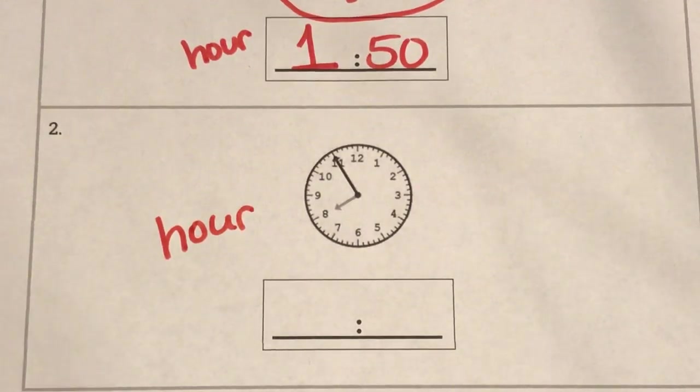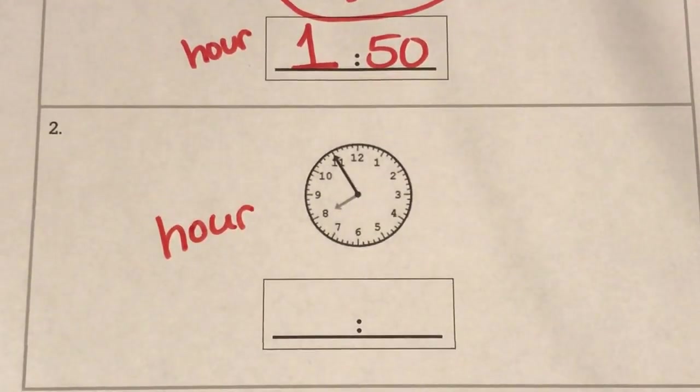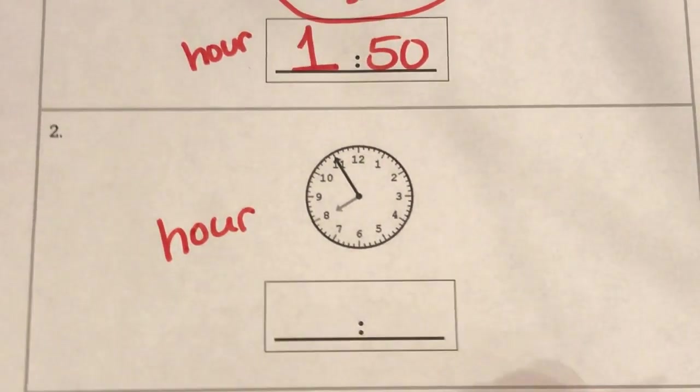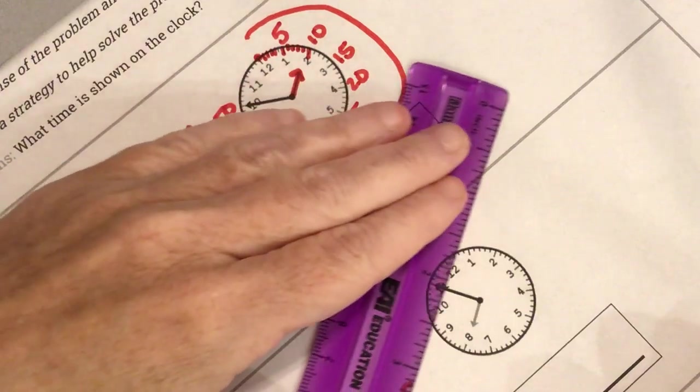Now this hour hand is so tricky. So tricky. If I look closely it really really looks like it is pointing to the eight. But I'm gonna show you something. I'm gonna get a ruler to show you this and I'm gonna move my paper a little bit.